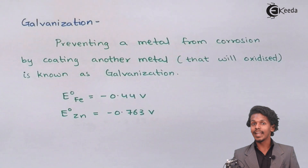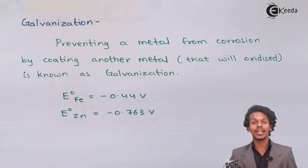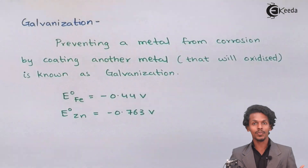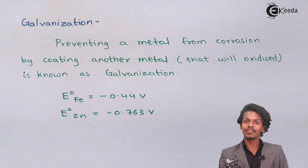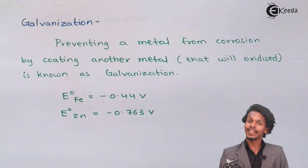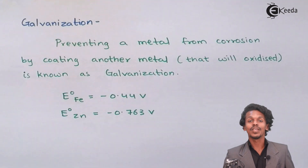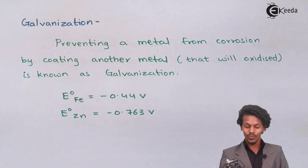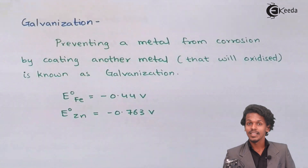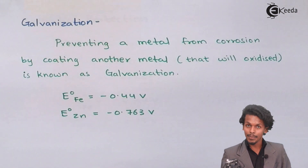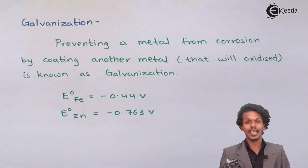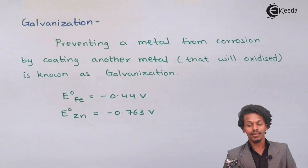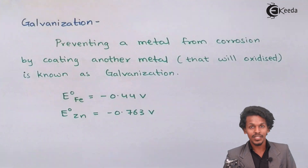Since the lesser the reduction potential, the more an element acts as an anode, zinc acts as the anode and iron acts as the cathode. Zinc undergoes oxidation, forming Zn²⁺ while liberating 2 electrons, and these electrons are helpful for the iron, depositing more iron. In this way, the iron is protected from corrosion through galvanization.